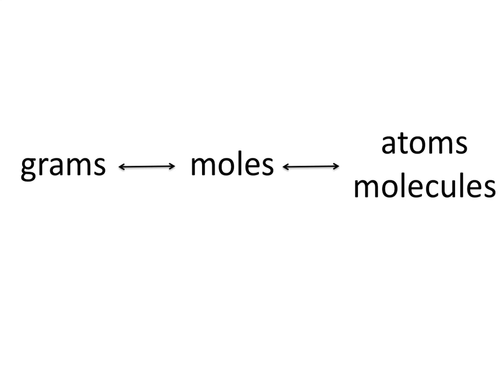Using this information, we can now convert between grams and moles using the molar mass. We also know that we can convert between moles and atoms or molecules using Avogadro's number. Although you can go indirectly from grams to atoms or molecules, you cannot directly go from grams to atoms or molecules — you need to go through moles to convert between grams and molecules.